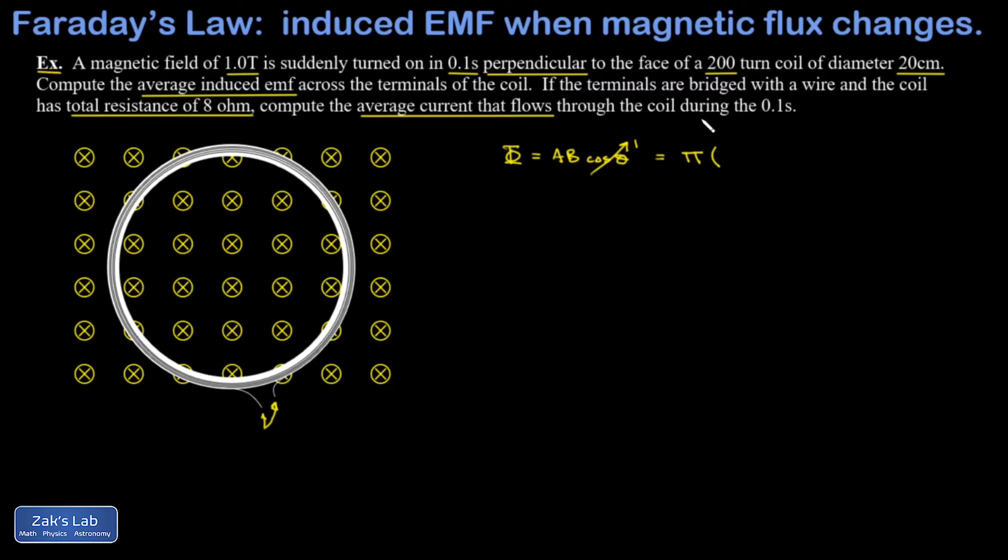And the magnetic field was just one tesla. So I get 0.0314 tesla meters squared for the final flux. And of course, the initial was 0 because the magnetic field was off initially.